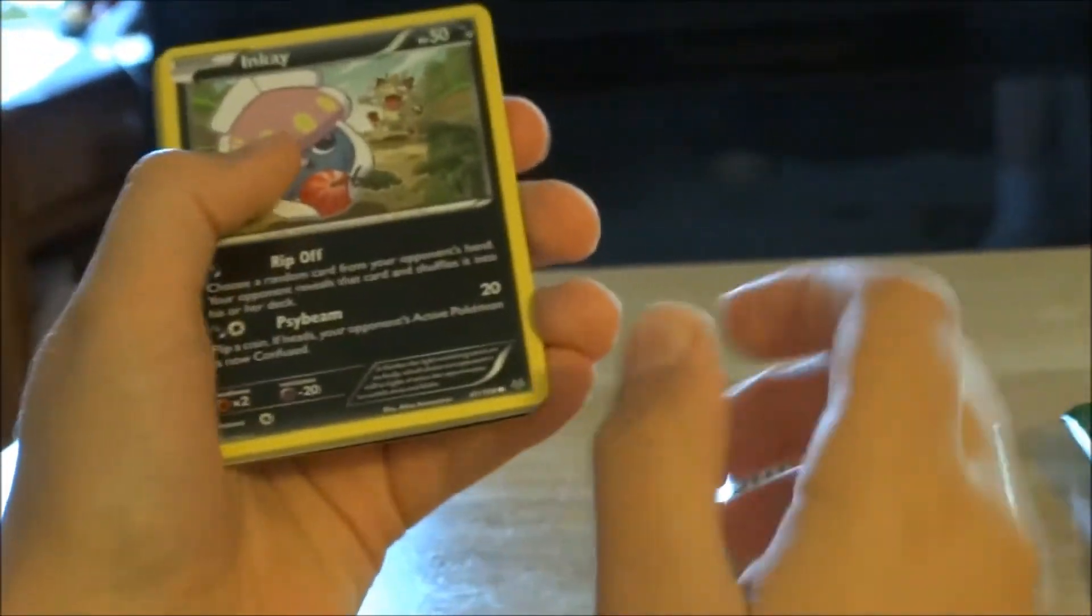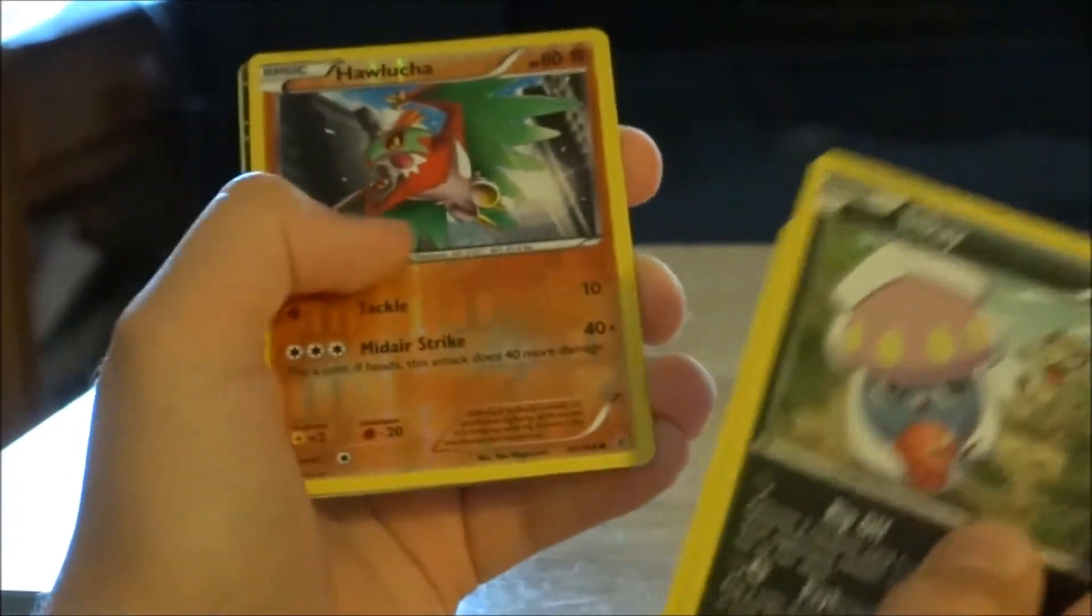Okay good. Inkay, Togepi, Exeggcute, Natu, Fletchinder, Reverse Hawlucha.